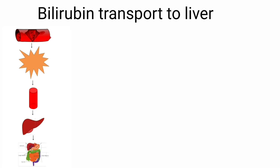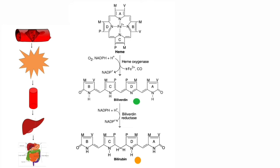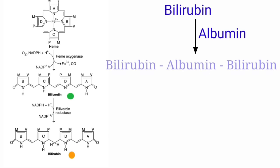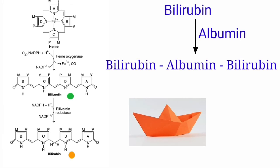Transport of bilirubin to the liver. Bilirubin which is formed is insoluble in plasma, so it cannot move in plasma as such to reach the liver. For this, bilirubin forms a non-covalent complex with albumin in plasma. Albumin binds loosely with bilirubin to form an albumin-bilirubin complex, which is polar in nature and can move freely in plasma. One molecule of albumin can bind two molecules of bilirubin, and 100 ml of plasma can transport up to 25 milligrams of bilirubin.